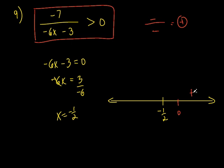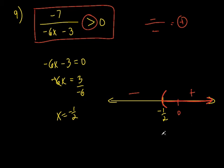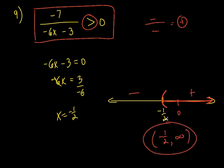So what's my answer? I want to find all the numbers that are greater than 0 — positive. I'm going to put a parenthesis at negative 1 half and shade everything to the right. The interval notation is open parenthesis negative 1 half comma infinity close parenthesis. And that's your answer right there.